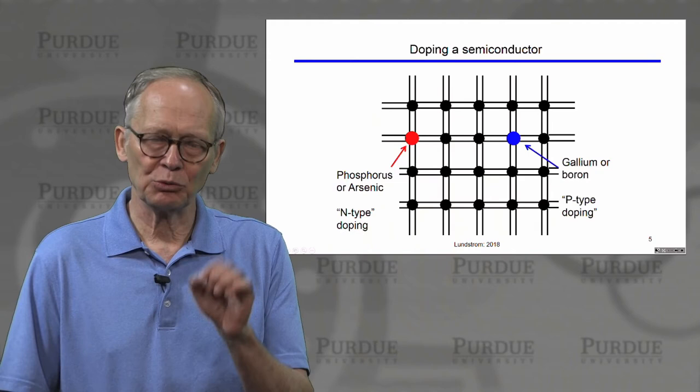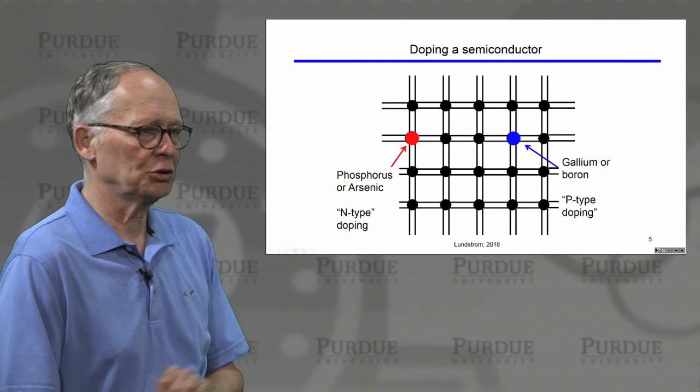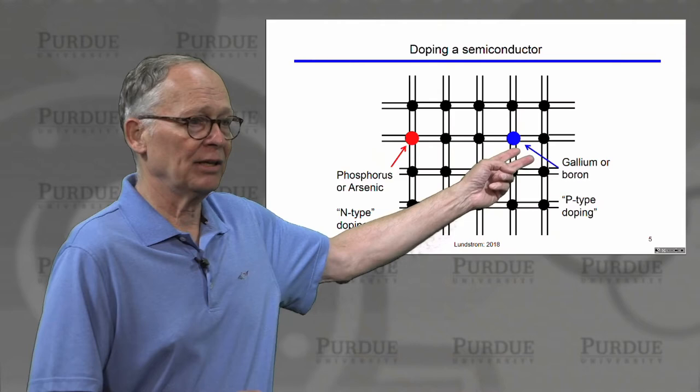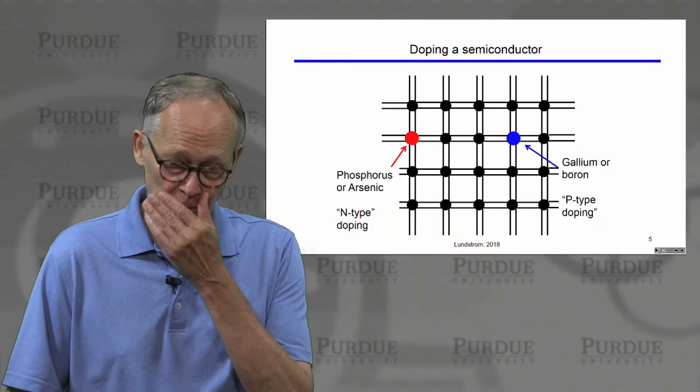What do we mean by doping? By doping, it means that we introduce other atoms into the crystalline lattice. For example, we might introduce phosphorus or arsenic — we would call this n-type or negative doping. Or we might introduce an atom like gallium or boron, and we would call that p-type or positive doping.